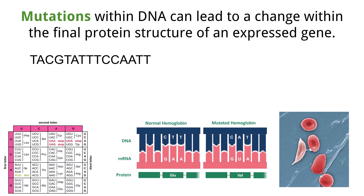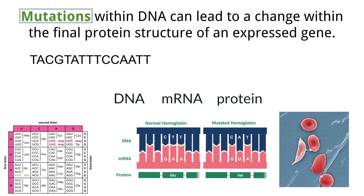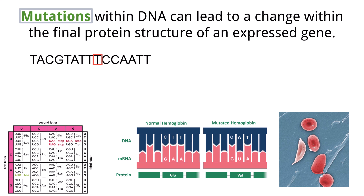We have seen from this process that the DNA code provides the instructions to create the messenger RNA, and the messenger RNA code provides the instructions to create the protein. So if the DNA code were to change through a mutation, this could have an impact on the final protein. For example, if there was a single point mutation in the DNA code and one thymine was mutated to instead be guanine, this would impact the messenger RNA structure as the new codon would read AAC.